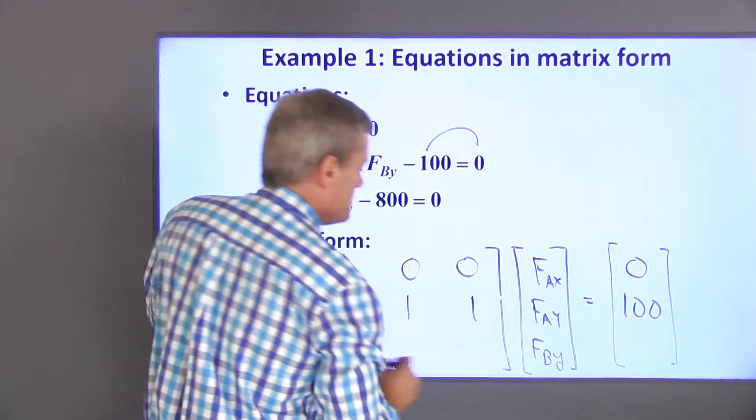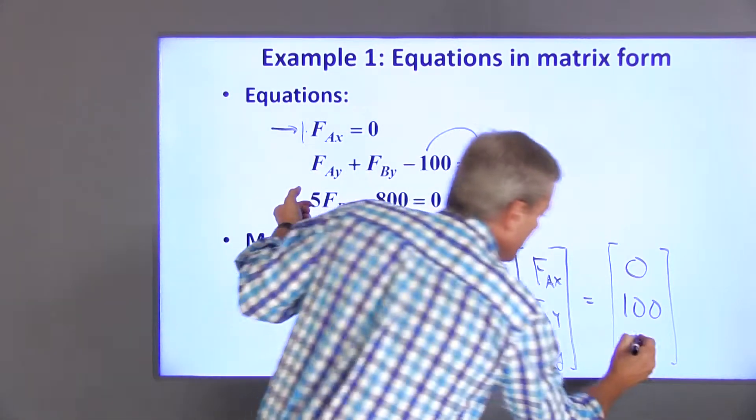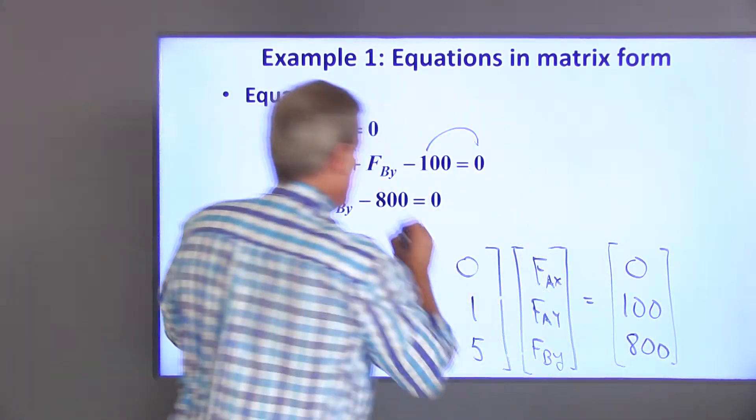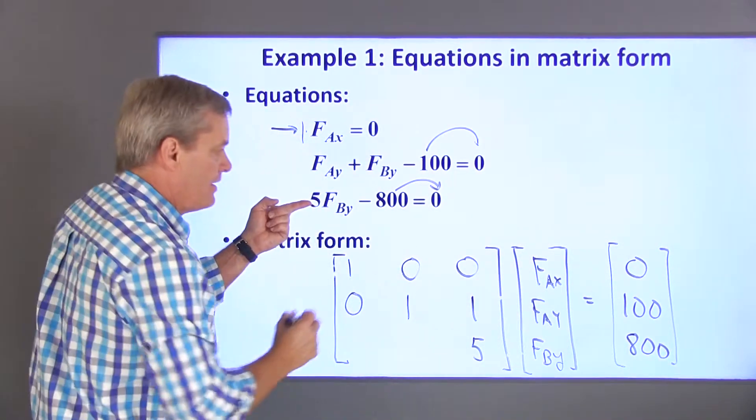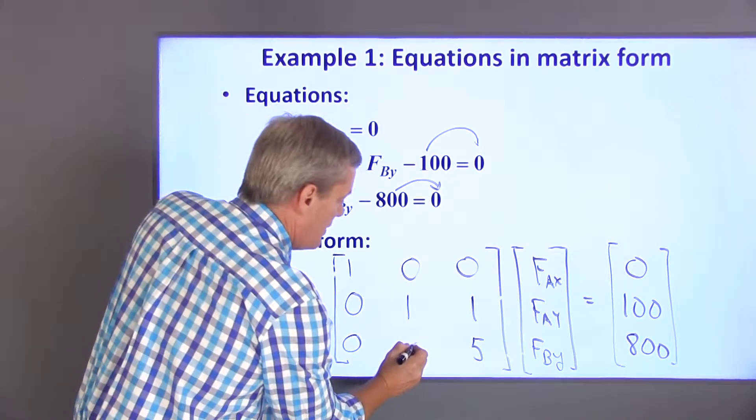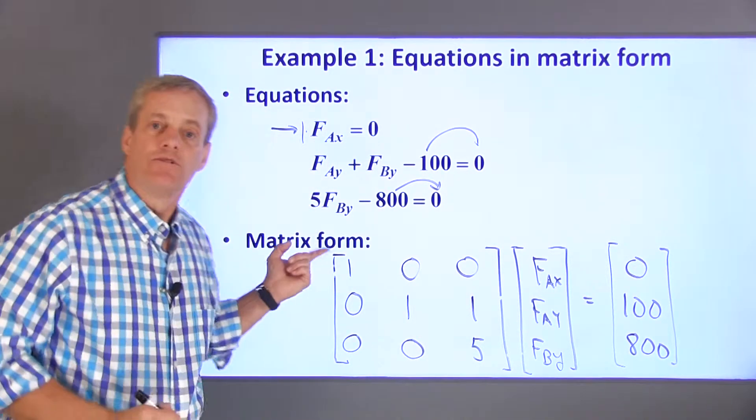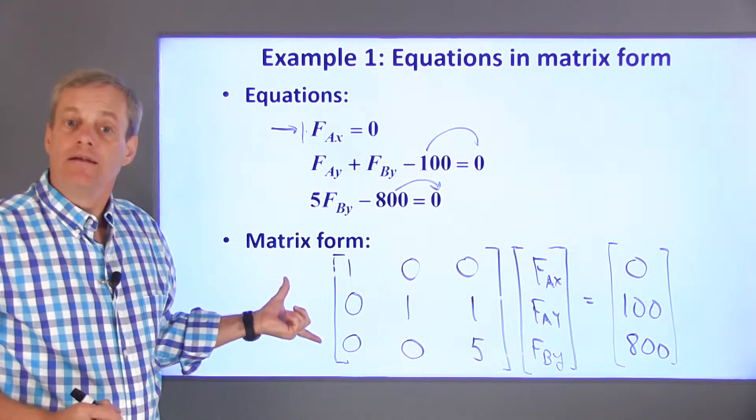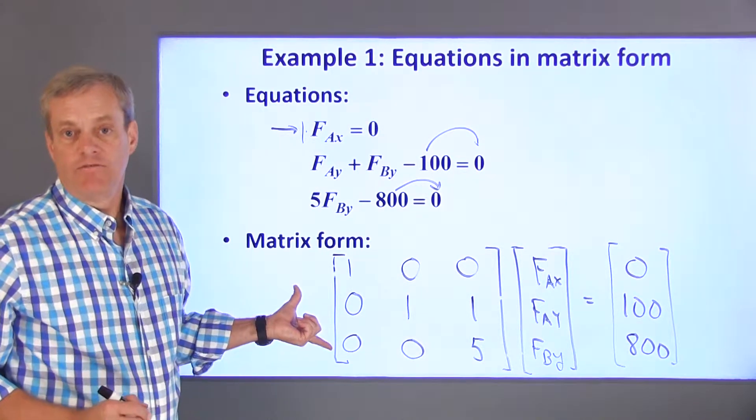The last equation is 5 times FBY is equal to 800. Moving this to the other side, there's no FAX and there's no FAY. So this is the matrix form of our equations. Next, I'll talk about solving the system of equations.